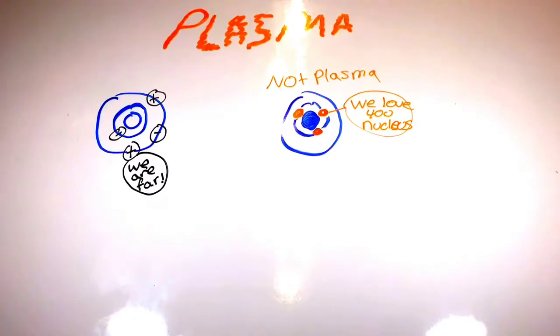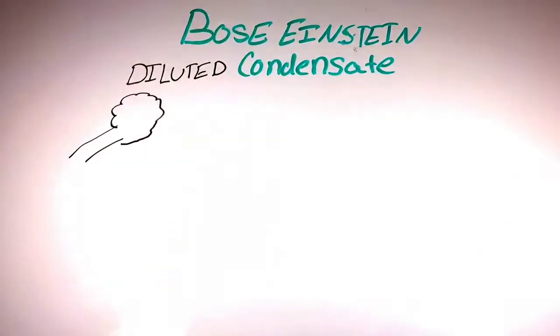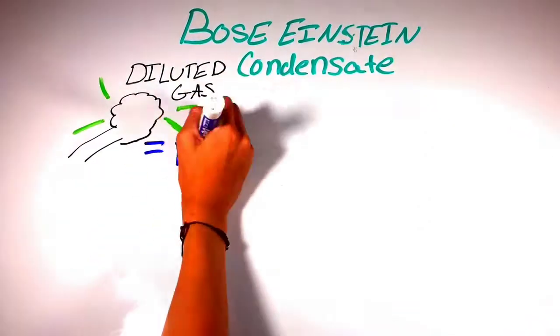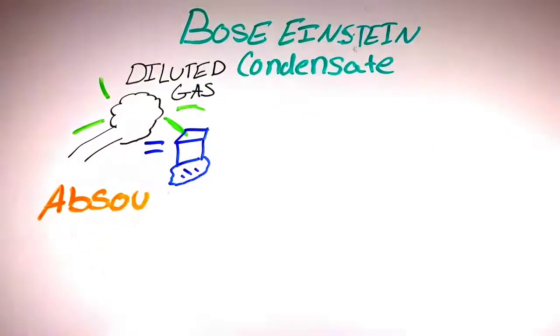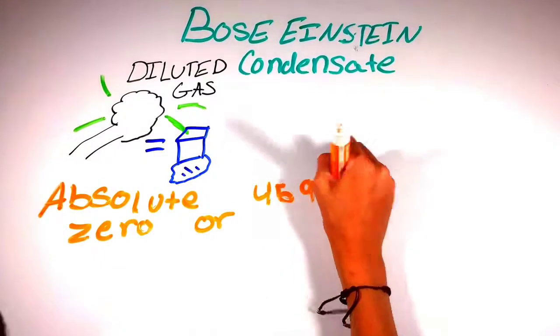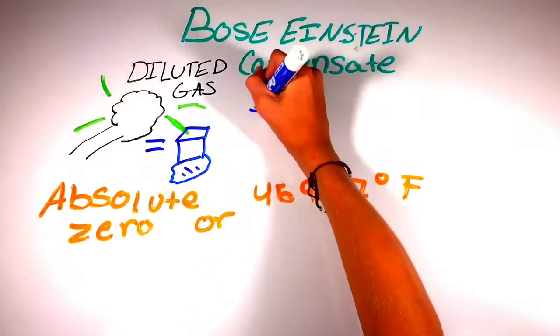Now we are going to dive even deeper into matter. Bose-Einstein condensate, in simple terms, is a diluted gas that has been cooled with lasers down to absolute zero, which is 459.67 degrees Fahrenheit.